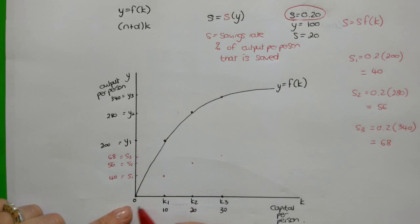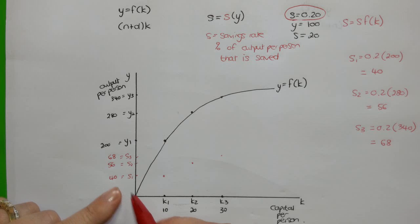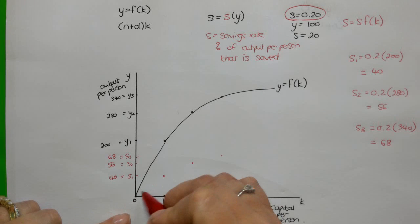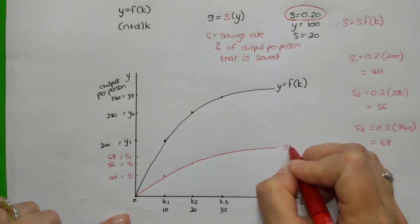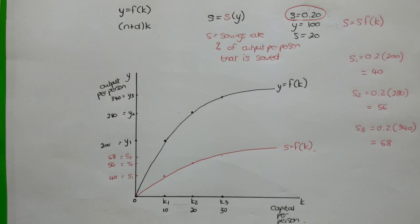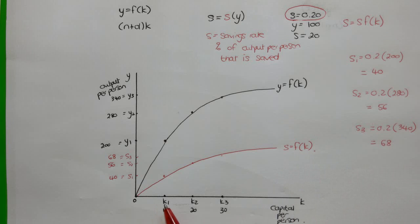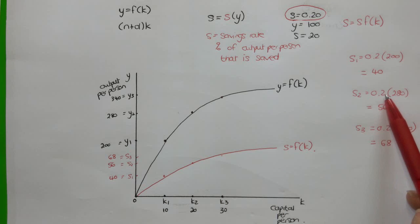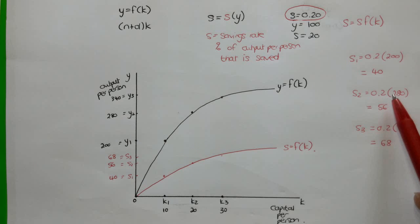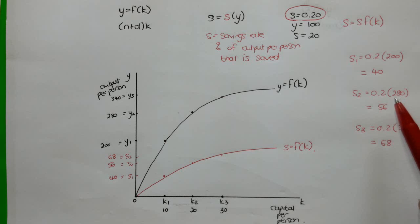When we draw these in, there are three things to notice. First, the savings function is positively sloped. As the capital to labour ratio increases, output per person increases. If we save a constant percentage of our output per person, then savings per person also increases as output per person increases. So there's a positive relationship between the capital to labour ratio and output per person, and between output per person and savings per person. That's the first thing — the savings function is positively sloped.